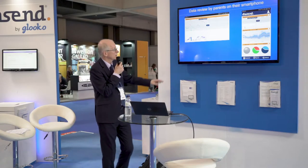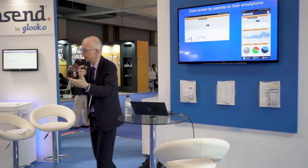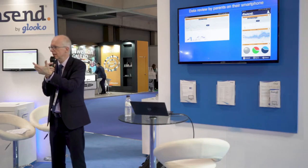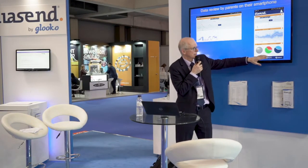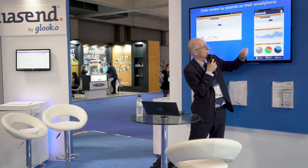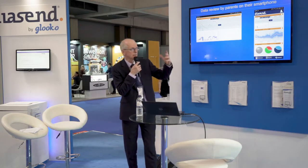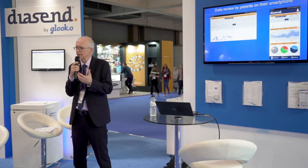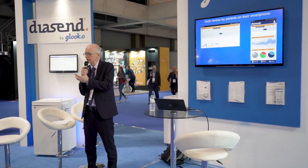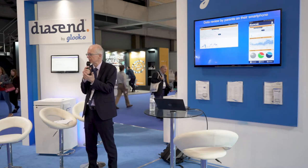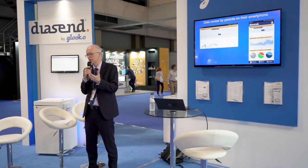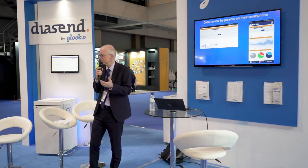Parents can also look through the phone to the cloud and see the data uploaded at any time. You can see the time in range, the AGP, and what's happening — this was taken yesterday evening on the app. You can also flip it into landscape mode and see more details. Having a closed loop system and a way to visualize and analyze the data tremendously improves the ability of healthcare professionals to use the data and for parents to see what's happening during the day with their children.